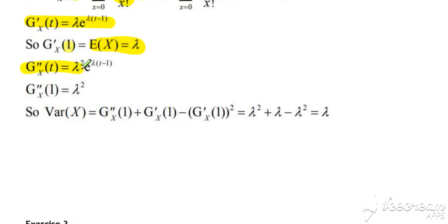And for the variance, differentiate again. So, differentiate. So, again, we multiply by lambda, giving us lambda squared, e to the lambda t minus 1. Substitute 1 in, and we get lambda squared, and then our variance formula.